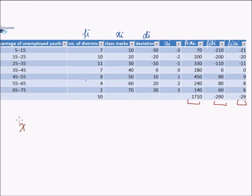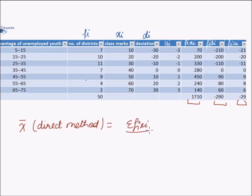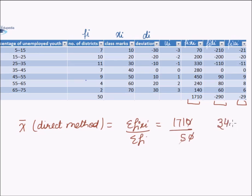By the first method — the direct method — x̄ = Σfixi / Σfi = 1710 / 50 = 34.2.